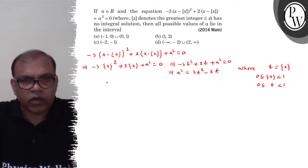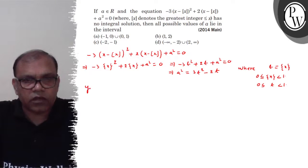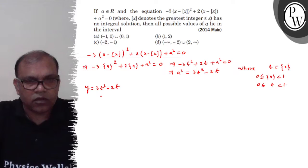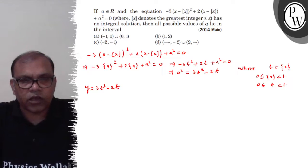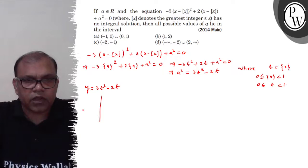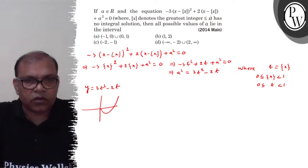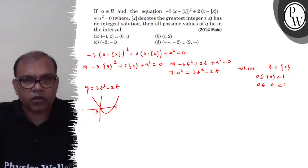तो अब हम graph draw कर लेते हैं y equals 3t² minus 2t का। तो देखो, 3t² minus 2t — यह तो एक quadratic है। इस quadratic के 2 roots आ गए: एक root आया 0, एक root आजाएगा 2/3।